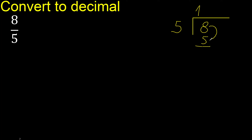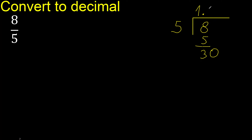8 minus 5 is 3. There is no number that goes down, so we complete — always complete with a 0. Place a decimal point, only once. 30. 5 multiplied by 6 is 30.